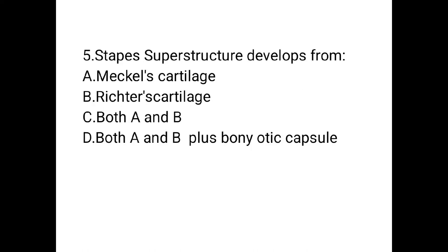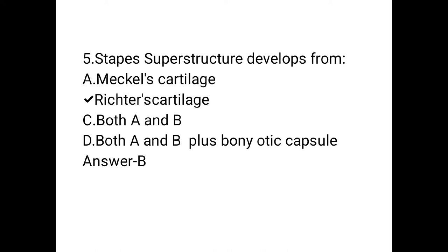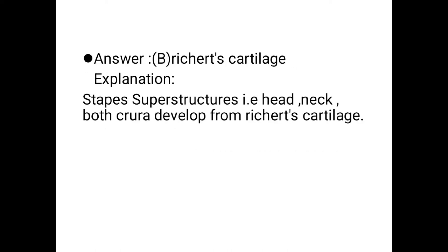Next question: stapes superstructure develops from — Option A: Meckel's cartilage. Option B: Reichert's cartilage. Option C: both A and B. Option D: both A and B plus bony otic capsule. Option B, Reichert's cartilage, is the correct answer. Explanation: the stapes superstructure — that is, the head and neck — and both crura develop from Reichert's cartilage.